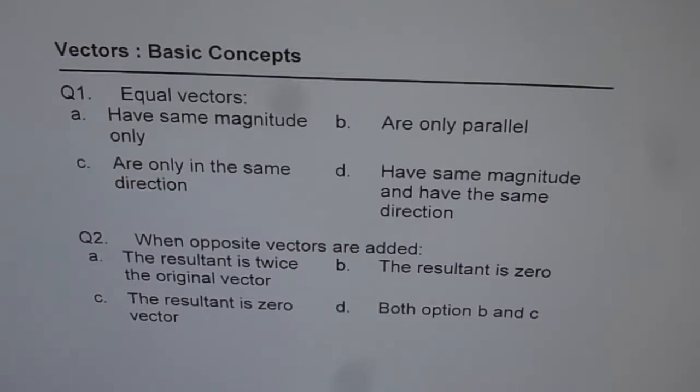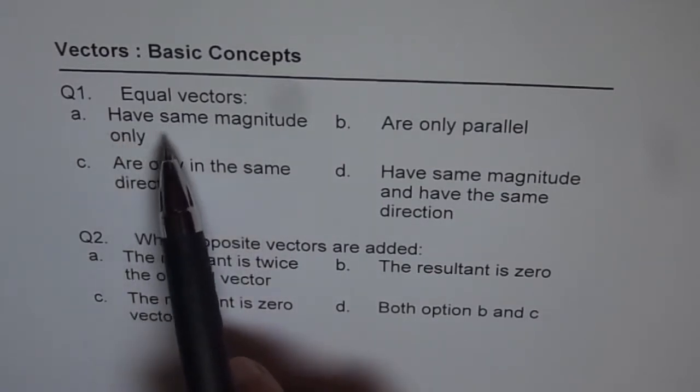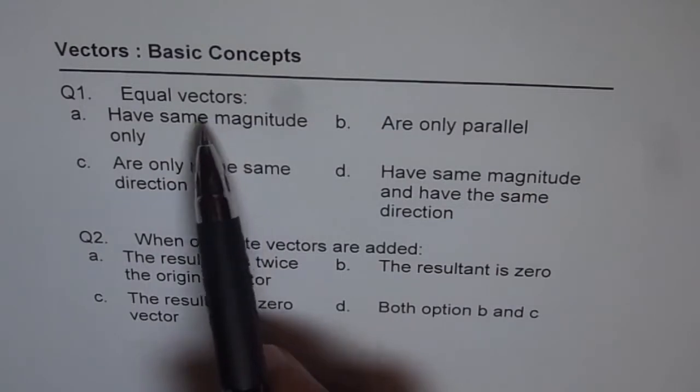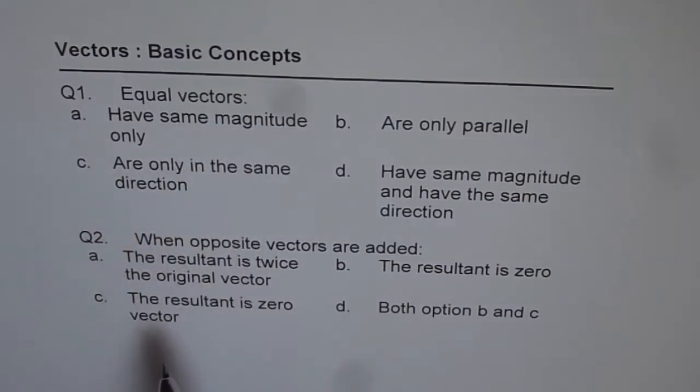Question number 1 is equal vectors. They have same magnitude only? No, it's not just the magnitude. They have both magnitude and direction as same, right?